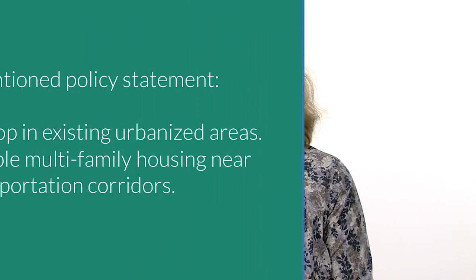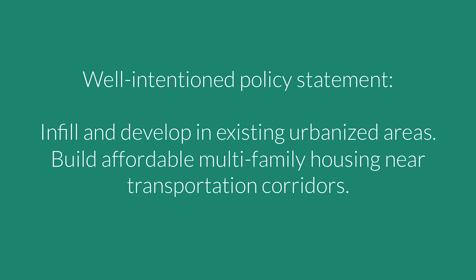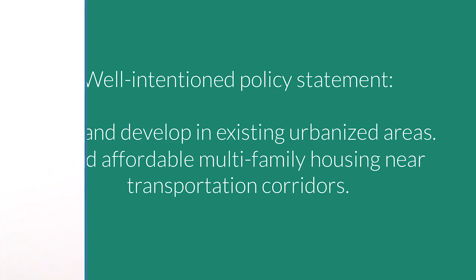In theory, our zoning ordinances should implement our comprehensive plans, but that is frequently not the case. For example, if you read the statement on the screen, picture in your mind what type of place you think that should be. This is a very common idea that a lot of comprehensive plans emphasize — sort of ideal places like apple pie and motherhood — what community would not want these things?